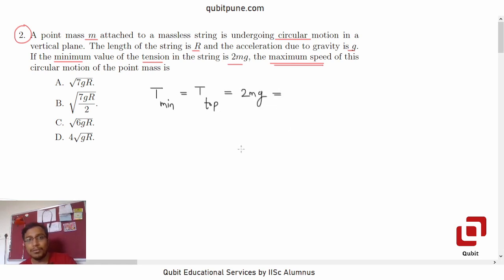And in circular motion like this one, tension is the centripetal force. So M v_top squared by R, that is the centripetal force formula, that must be equal to 2mg.